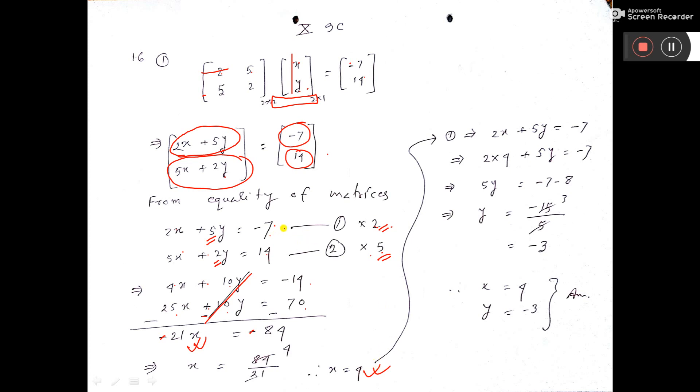Now take any one equation. I have taken equation number 1 here. And put the value of x that is 4. And simplify, 8 will go that side. So minus 7 minus 8. And 5 will go down. So minus 3 is the value of y. So you have got the value of x and y.